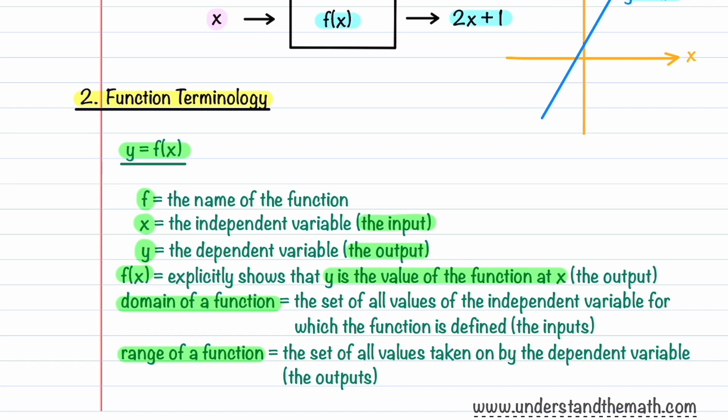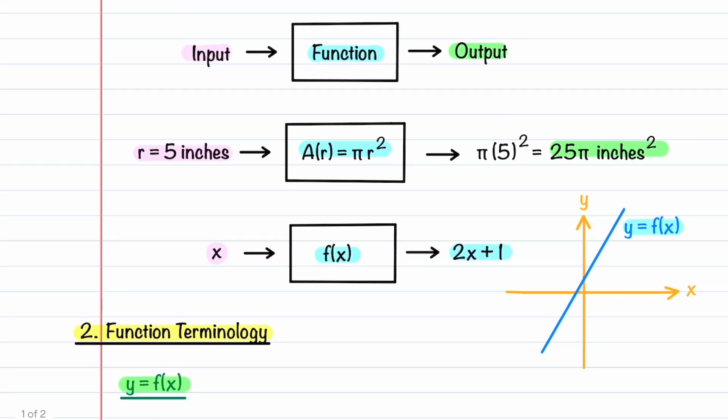Let's see how this terminology applies to the two examples that we just looked at. For our area function, our domain is the radius, and it has to be greater than or equal to 0 because the radius represents the physical distance from the center of a circle to its boundary. The range, A of r, is also greater than or equal to 0 because you can't have a negative area.